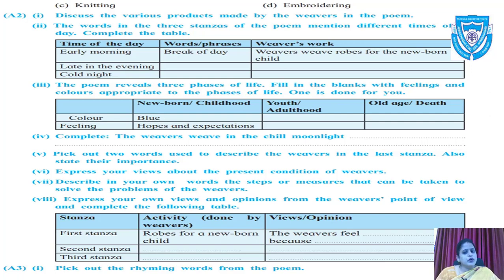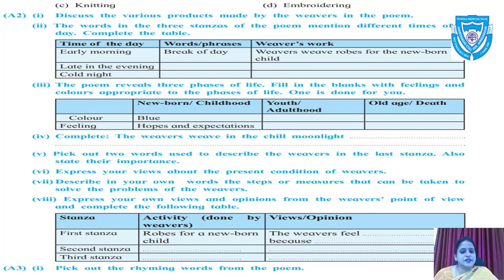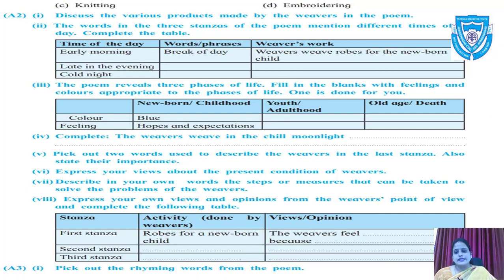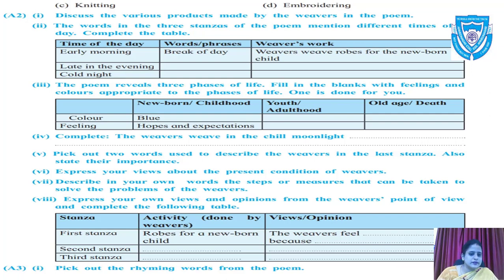The next question asks you to describe steps or measures that can be taken to solve the problems of the weavers. First understand what problems these weavers are facing, then suggest remedies or solutions that we and the government can put forward to help weavers. This should be entirely in your own words.